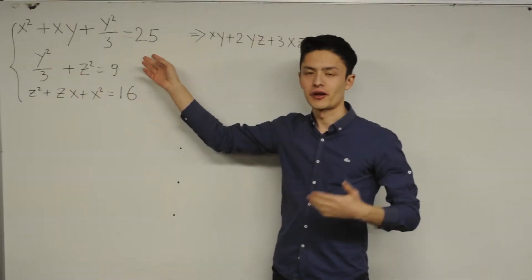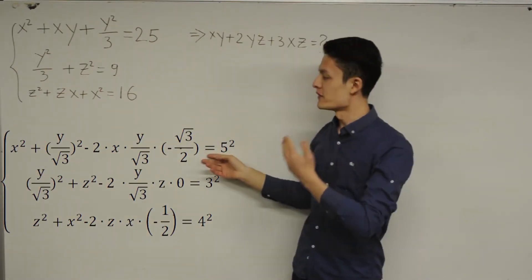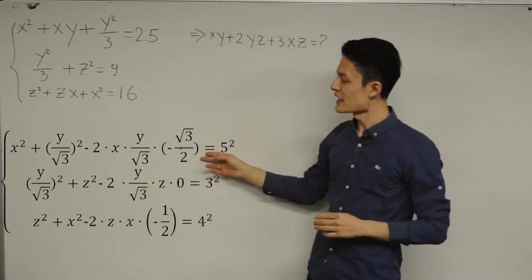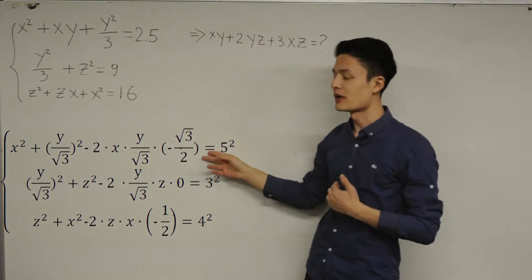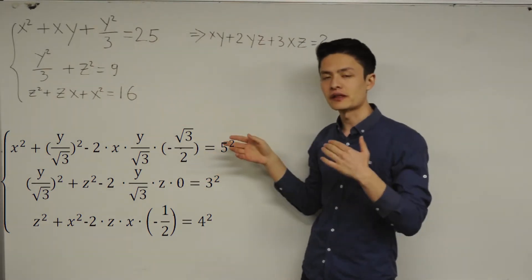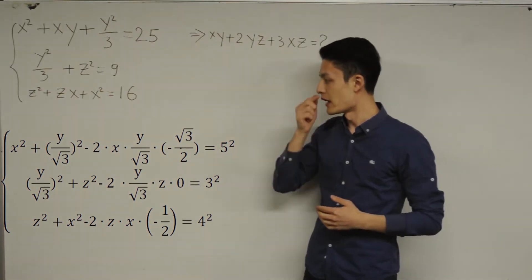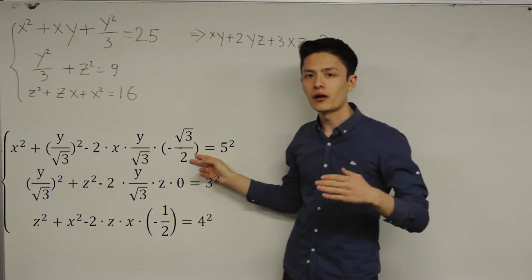So let's focus on the first equation. I can write this first equation as this. So what I did is, first I wrote x squared and then y squared divided by 3, but instead of plus xy here, I'm writing minus 2 times xy times minus 1 over 2. Because if you cancel those numbers, we are going to have this plus xy here again. And now instead of 25, we can write 5 squared.